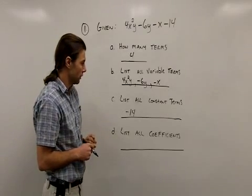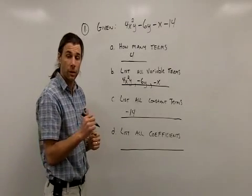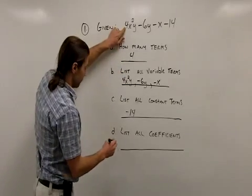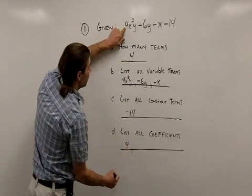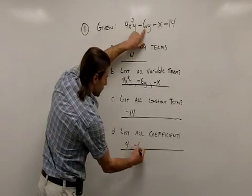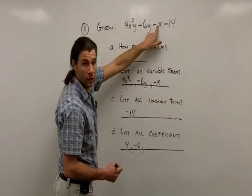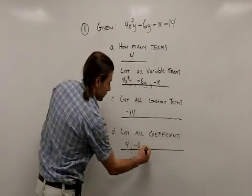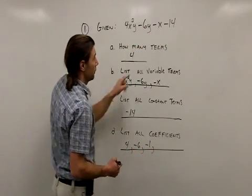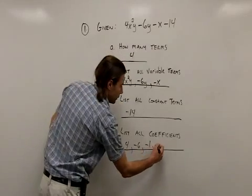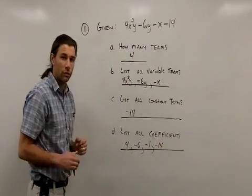List all of the coefficients. Well the coefficients are the numbers that appear in the terms. So my first coefficient is 4. My next coefficient is -6. Even though it doesn't appear, there is understood that there's a 1 here. So the coefficient on this term is -1. The last term, -14. The coefficient is -14.